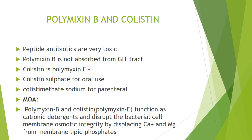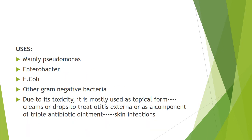Polymyxin and colistin are peptide antibiotics and are very toxic. Polymyxin is not absorbed from the gastrointestinal tract. Colistin is polymyxin E; colistin sulfate is reserved for oral use, while colistin methane sulfonate sodium is used for parenteral use. Mode of action: polymyxin B and colistin function as cationic detergents and disrupt the bacterial cell membrane osmotic integrity by displacing calcium and magnesium from membrane lipid phosphates. Clinical uses: mainly effective against Pseudomonas, Enterobacter, E. coli, and other gram-negative bacteria. Due to toxicity, it is mostly used in topical form like creams or drops to treat otitis externa or as a component of triple antibiotic ointment for skin infections.